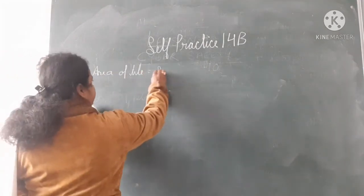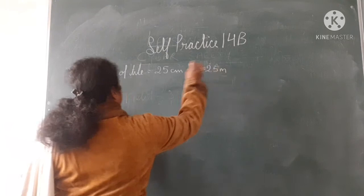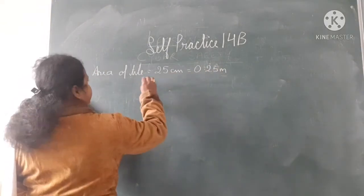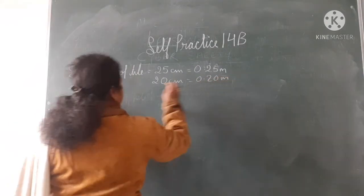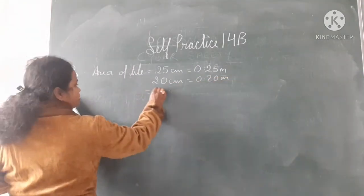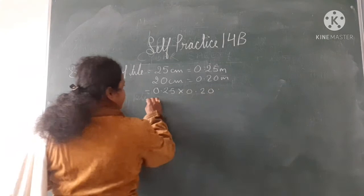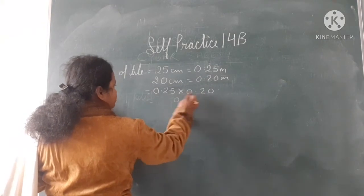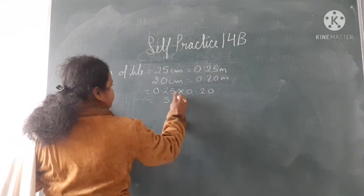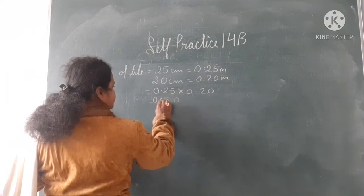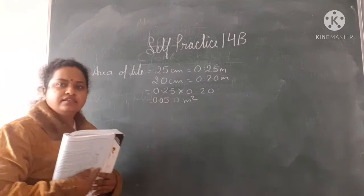It is given 25 centimetre which is equal to 0.25 metre, and 20 centimetre which is equal to 0.20 metre. So area equals 0.25 into 0.20, giving 0.050 metre square. This will be your area of the tiles.